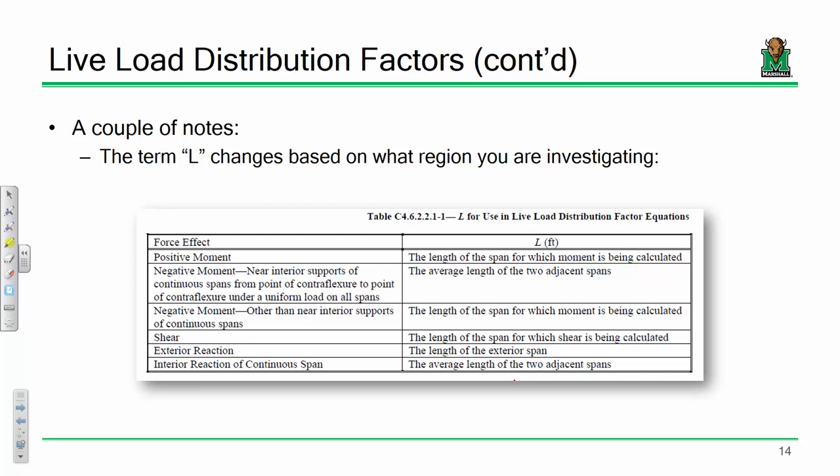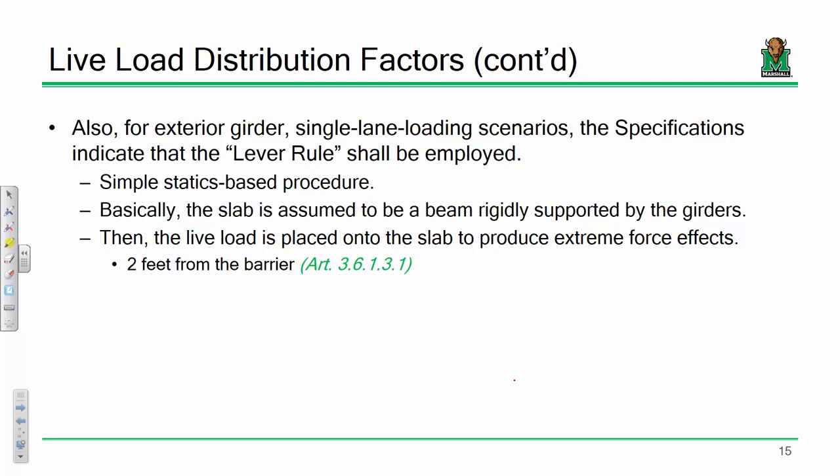L refers to span length, but it has different meanings depending on context. For a two-span indeterminate bridge where spans are 40 and 80 feet: for positive bending distribution factors, L is the span in question — 40 or 80. For negative bending distribution factors over the pier, L is the average of the two adjacent spans — so 60 feet. These are all empirical, curve-fit expressions, so be aware of these distinctions.